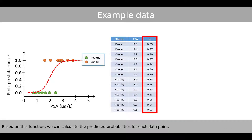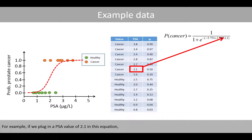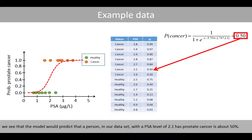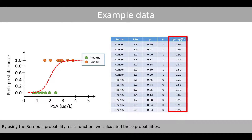Based on this function, we can calculate the predicted probabilities for each data point. For example, if we plug in the PSA value of 2.1 in this equation, we see that the model would predict that the person in our data set with the PSA level of 2.1 has prostate cancer at about 50% probability. By using the Bernoulli probability function, we calculated these probabilities.